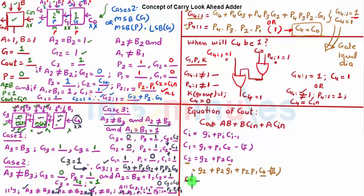C3 is nothing but G3 plus P3 C2. Let's substitute the value of C2 here, so that is nothing but G3 plus P3 G2 plus P3 P2 G1 plus P3 P2 P1 C0. So this is equation 3.